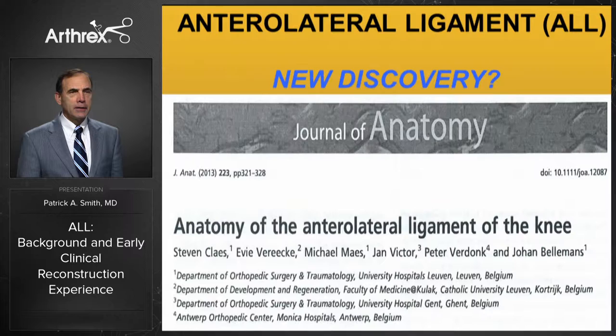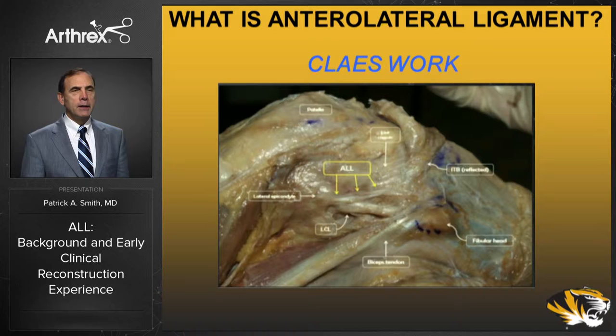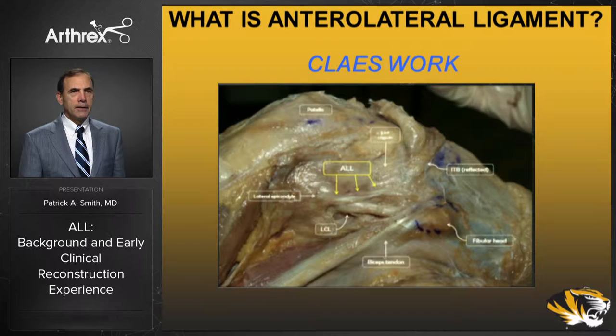So what is the anterolateral ligament? This is one of Stephen's pictures and you can see here outlined in yellow this band of tissue that begins near the lateral epicondyle and extends anterior to the lateral collateral ligament, just below it, inserting on the tibia.